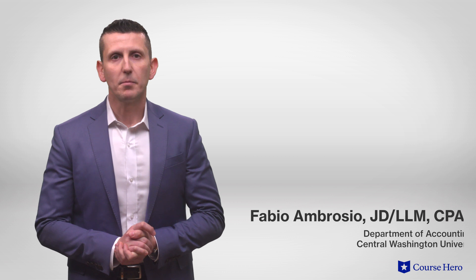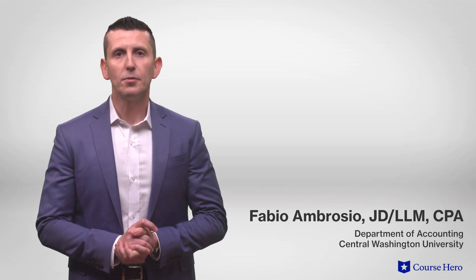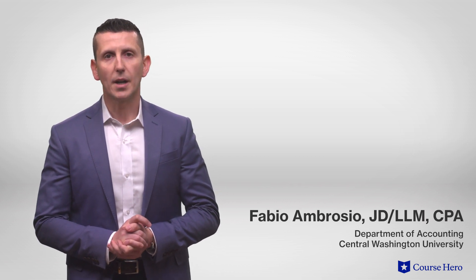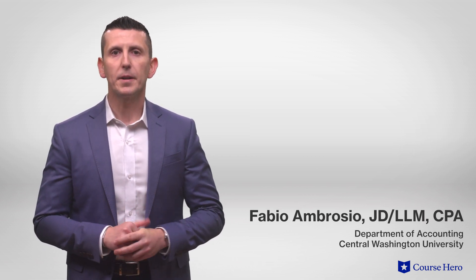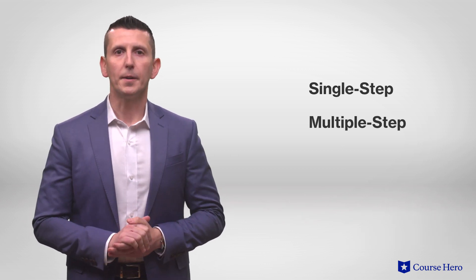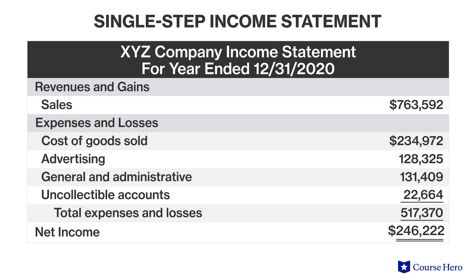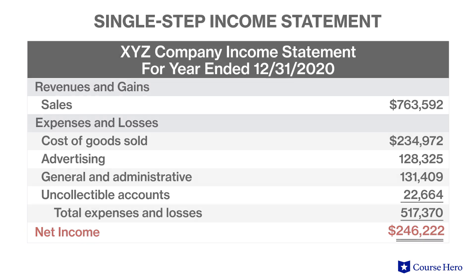An income statement is a summary of revenues and expenses over a period of time. There are two ways to prepare an income statement: a single-step way or a multiple-step way. In a single-step income statement, all revenues and gains are grouped together and placed at the top, and all expenses and losses are grouped together and reported under the revenues and gains. The sum of all of these yields net income.